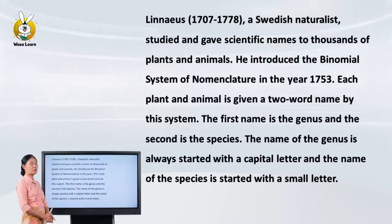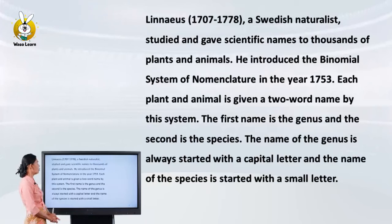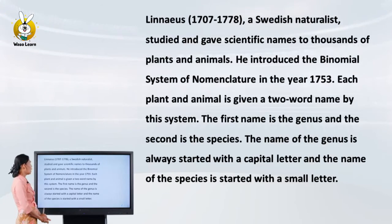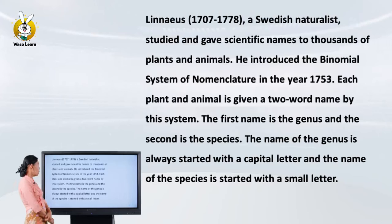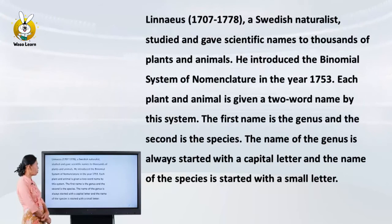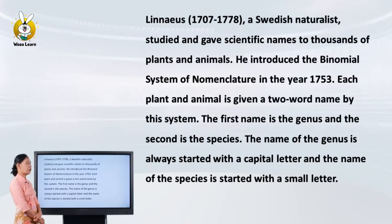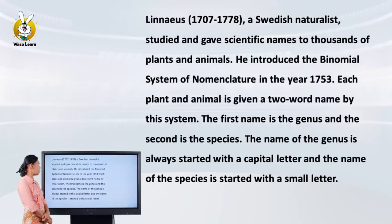Linnaeus (1707–1778), a Swedish naturalist, studied and gave scientific names to thousands of plants and animals. He introduced the binomial system of nomenclature in the year 1753. By this system, each plant and animal is given a two-word name.